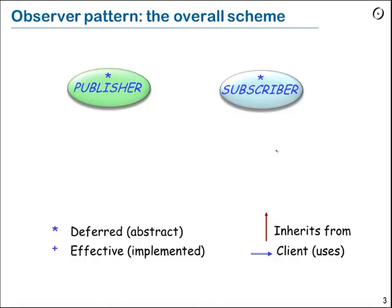The Observer pattern functions according to an architectural description involving a number of classes that you organize and integrate in your application. The basic classes are deferred classes Publisher and Subscriber — these are not yet going to provide functionality directly, but provide the abstractions. Publisher is a deferred class describing the general notion of a software element able to produce events, and Subscriber is a deferred class describing objects able to register for certain event types and react when events occur.